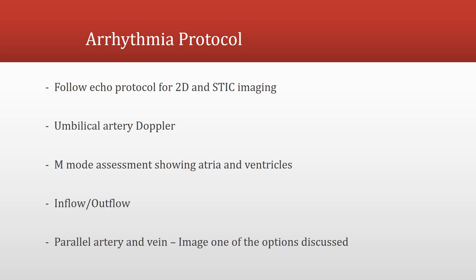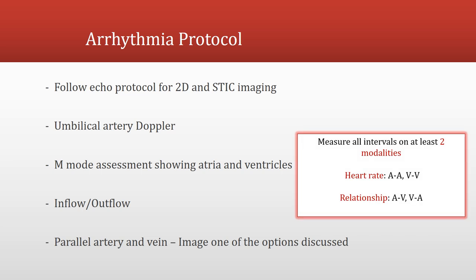We also want to obtain a parallel artery and vein image. Then we want to measure certain intervals on at least two of these modalities. Those intervals are A to A, or the atrial rate; V to V, or the ventricular rate; and the AV interval measured from the beginning of atrial contraction to the beginning of ventricular contraction; and the VA interval, measured from the beginning of ventricular contraction to the beginning of atrial contraction. We like to see these intervals measured on the M-mode image and one of the Doppler images obtained.